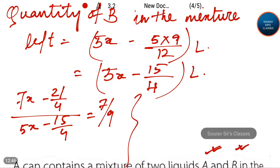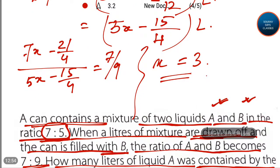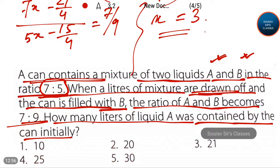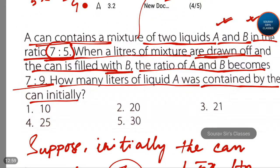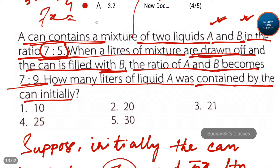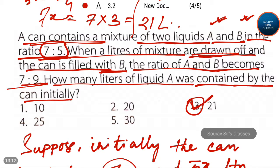By solving this, we can say that x is equal to 3. So the can contained 21 liters of liquid A, because 7x equals 7 into 3 equals 21. So option 3 is the correct answer — 21 liters of liquid A was contained by the can initially.